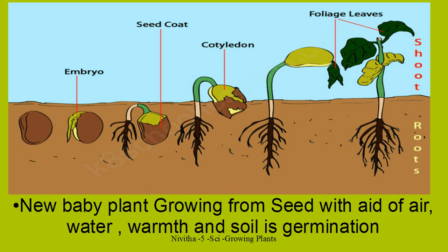If there is no sunlight, no warmth, no water, no air, it will be very difficult for a seed to germinate. Not all seeds germinate. Seeds wait for the right or sufficient condition for germination. Many seeds lie dormant for years before they find a suitable condition to germinate.